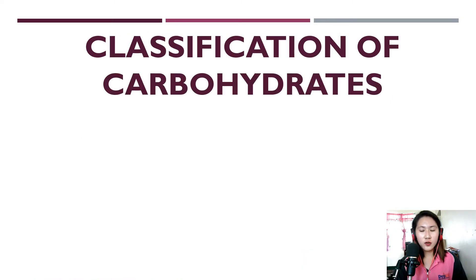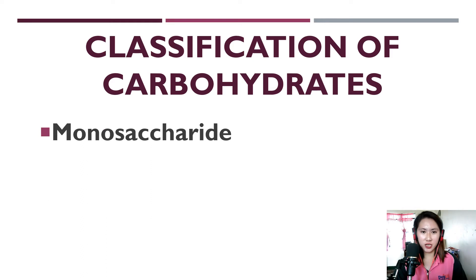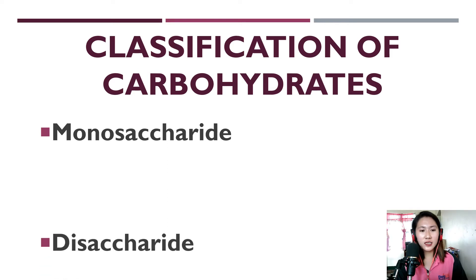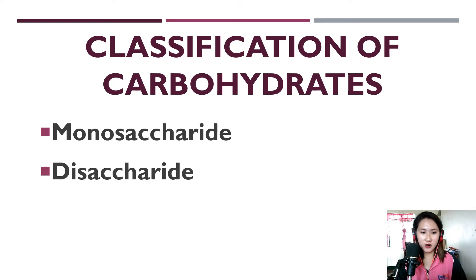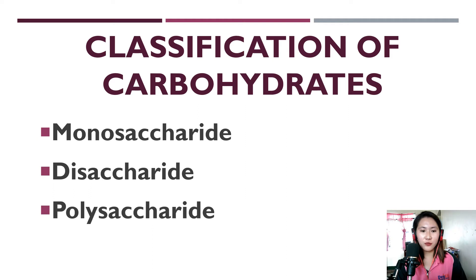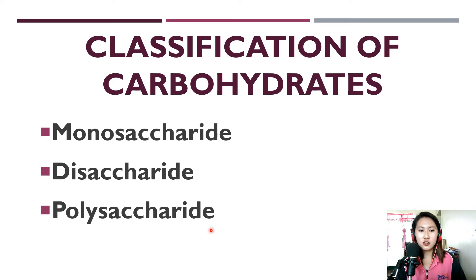Carbohydrates can be classified into three types. First, we have monosaccharide — the building block or monomer of carbohydrates. Next, we have disaccharide. And third, we have polysaccharide. Monosaccharide and disaccharide are also known as simple sugars, and polysaccharide is also known as complex sugar.